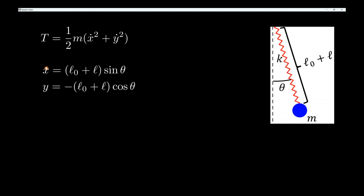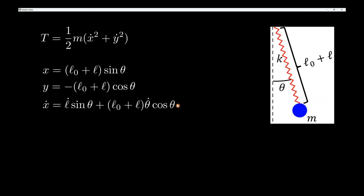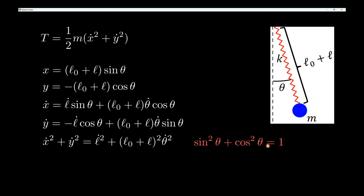When we take derivatives of x and y, we have to be careful because l is a function of time and theta is also a function of time. For x-dot, we use the product rule: l-dot times sine theta, plus l times theta-dot times cosine theta, applying the chain rule. Similarly for y-dot. We then square both equations and add them. Using the identity sine squared plus cosine squared equals one, we get a clean expression for v squared which we plug into the total kinetic energy.